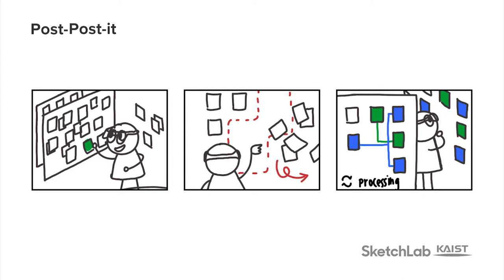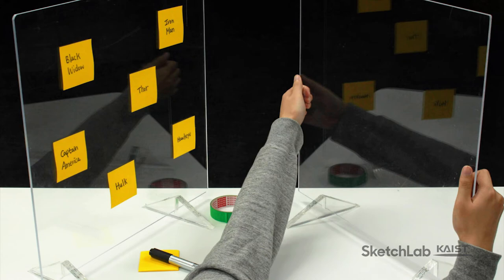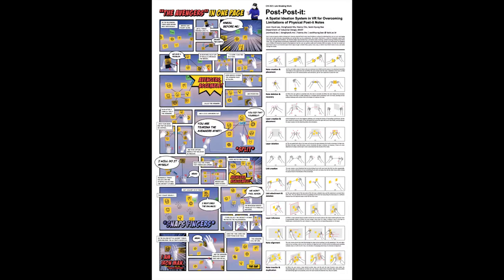To design a harmonious set of natural interactions, we prototyped with physical materials such as transparent acrylic panels and masking tape to group and connect notes in 3D space, to delete an unwanted note by crumpling, and to disconnect an unwanted link by tearing.